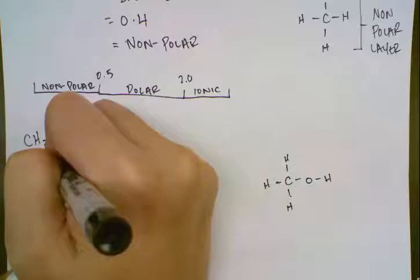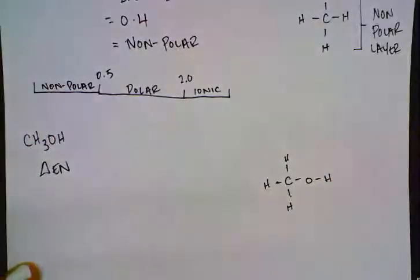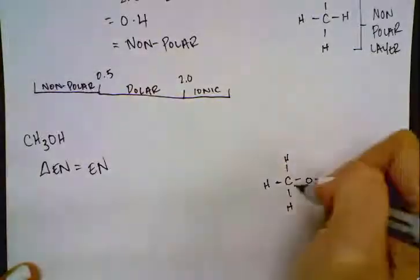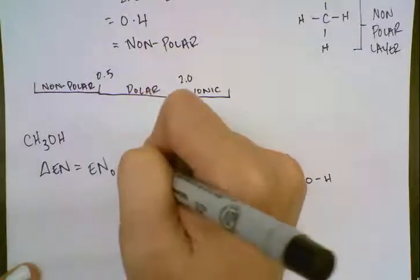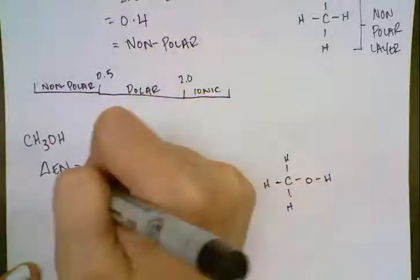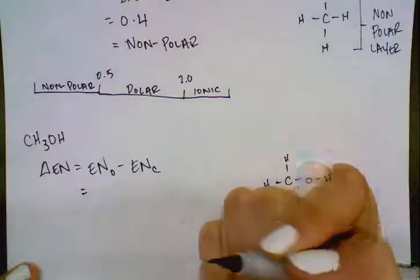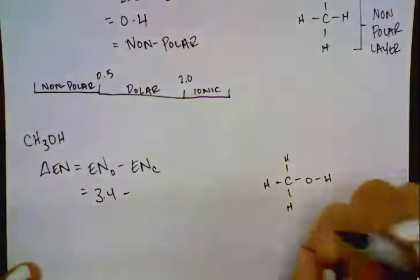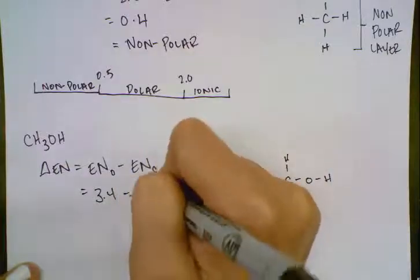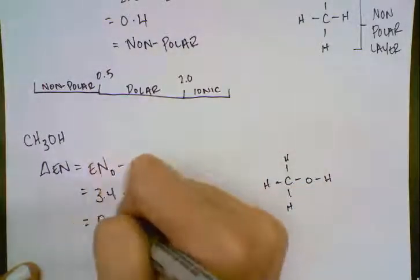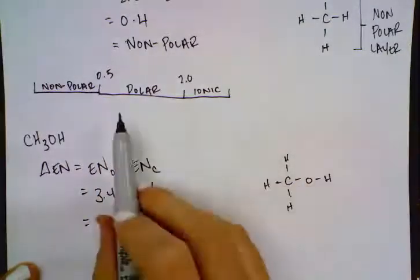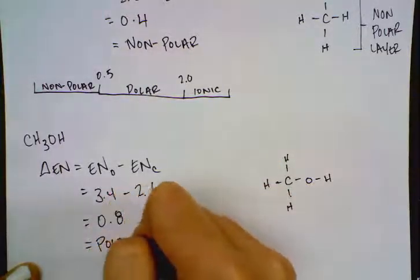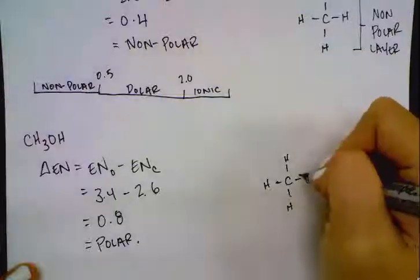So now we need to know what the carbon-oxygen bond does and the oxygen-hydrogen bond does. So we're going to again do our delta EN. So we're going to have our electronegativity. Let's do carbon-oxygen of oxygen subtract from that carbon. So in this case, we're going to have 3.4 if we look this up in the table, subtracted 2.6. So that's going to be 0.8. This fits into that polar section. So we know this bond is polar.